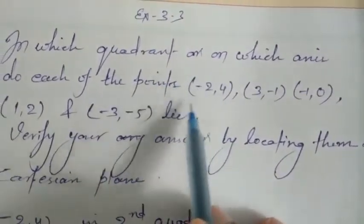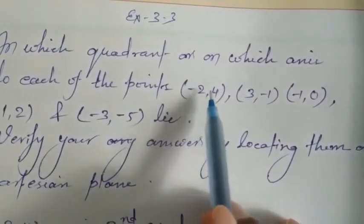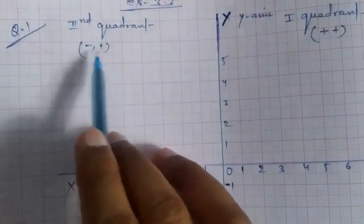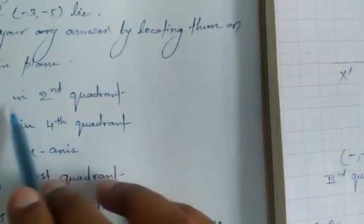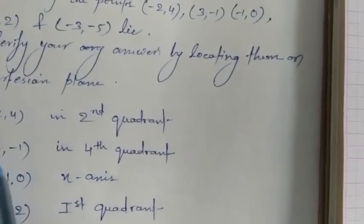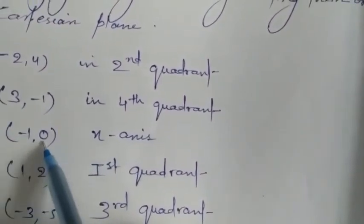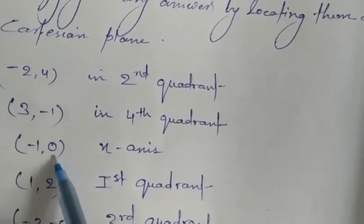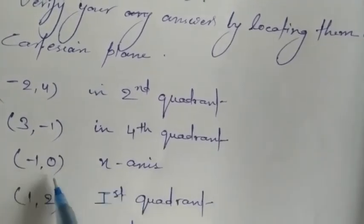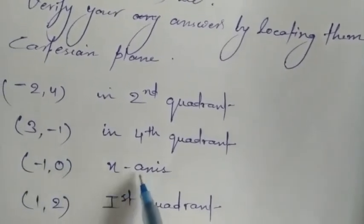For the direct answers: minus 2 comma 4 — x is negative, y is positive, so it lies in the second quadrant. For 3 comma minus 1 — x is positive, y is negative, so it lies in the fourth quadrant. For minus 1 comma 0 — since the y-coordinate is zero, this point lies on the x-axis. For 1 comma 2 — both are positive, so it lies in the first quadrant.